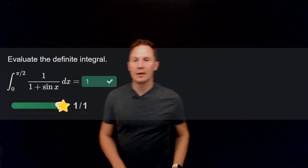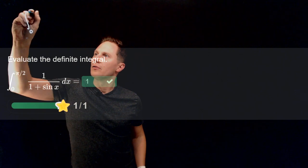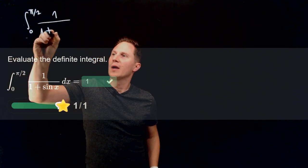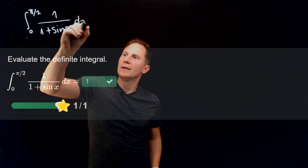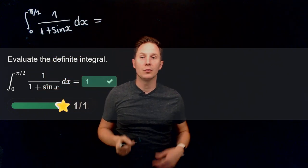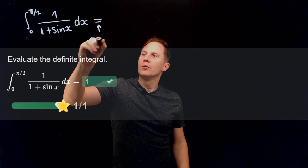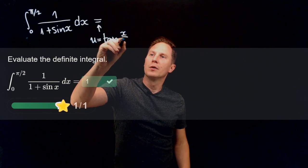I hope you paused it and found the value to be 1. Again, we use the tangent half-angle substitution: u = tan(x/2). This turns the integral into a rational integral in terms of u.